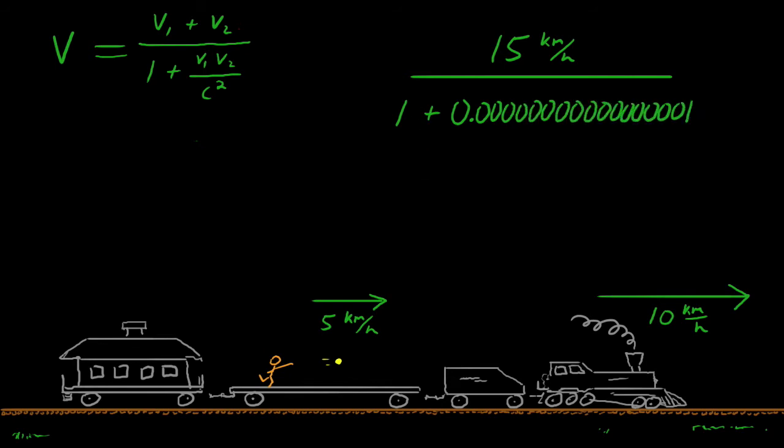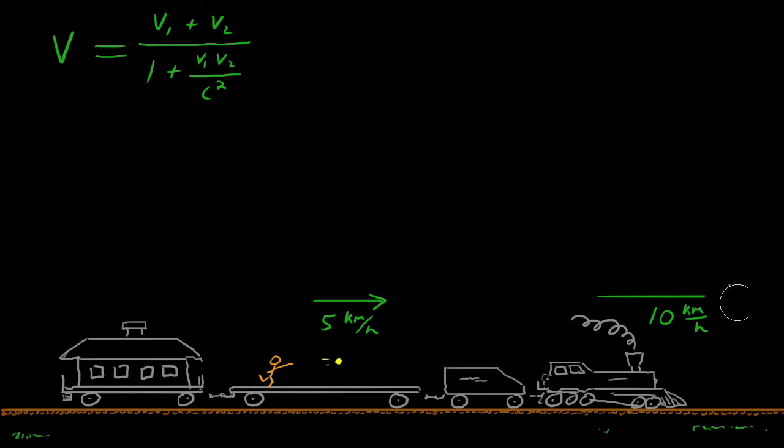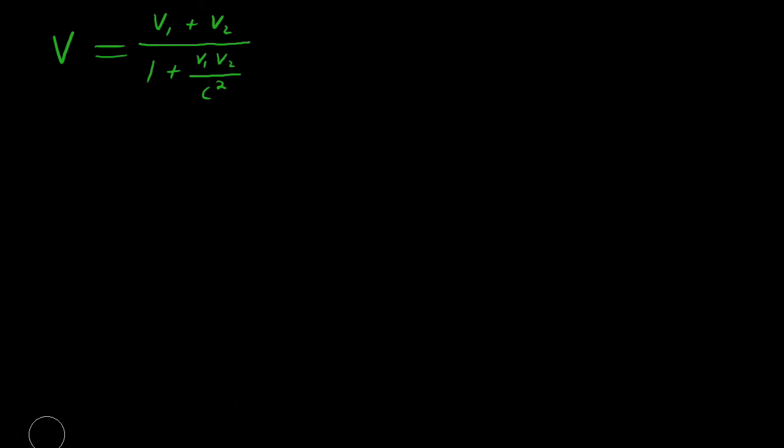So what you're doing here is you're taking the number 15 and you're dividing it by a number that's slightly greater than 1. And you end up with a resultant velocity of 14.99999999999999 kilometers per hour. Close enough, right? But things begin to change when the speed becomes an appreciable fraction of the speed of light.